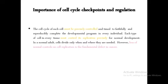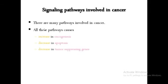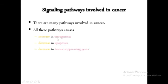Now let's jump into the signaling pathways involved in cancer. There are many pathways in the human body involved in cancer but we will discuss only three. All these pathways at the end cause increase in oncogenesis, decrease in apoptosis, and decrease in tumor suppressing genes. Oncogenesis means synthesis of oncogene — a gene that has the ability to produce cancer cells — so in cancer, oncogenesis increases meaning the production of cancer cells increases.